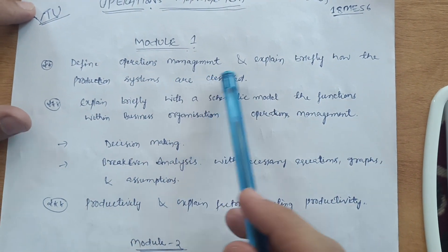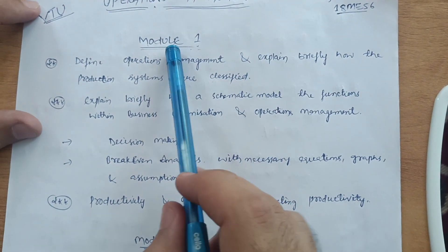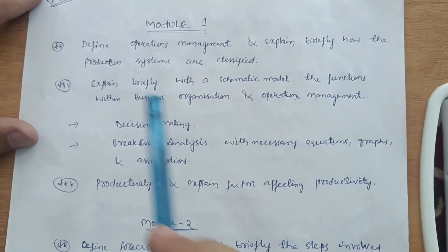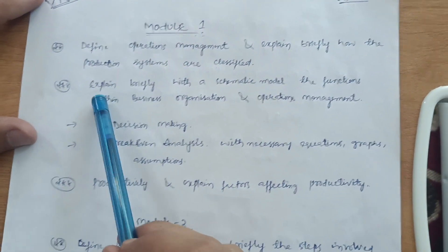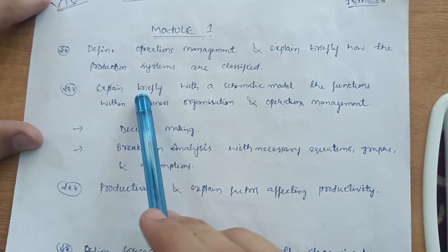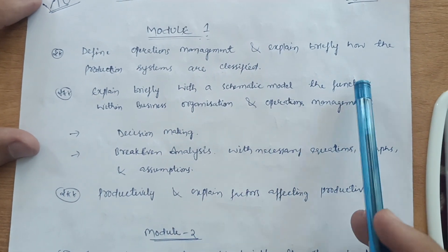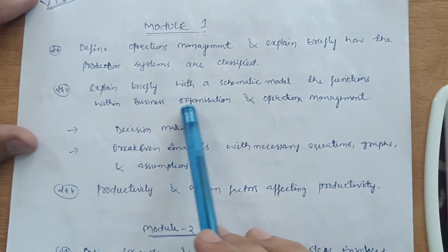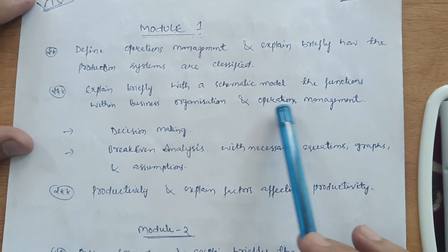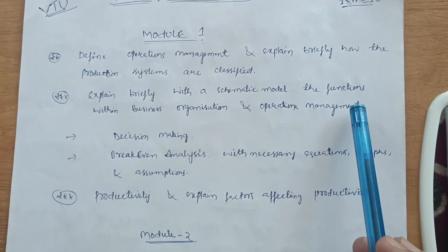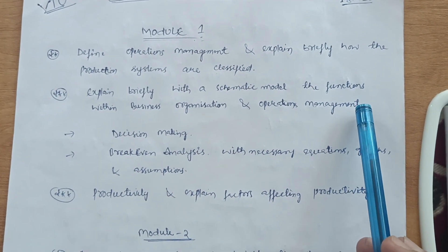In Module 1, I will sort out some questions mostly asked in the VTU examination. The first important question is: define Operations Management and explain briefly how production systems are classified. The second one is: explain briefly with the systematic model the functions within a business organization and Operations Management.